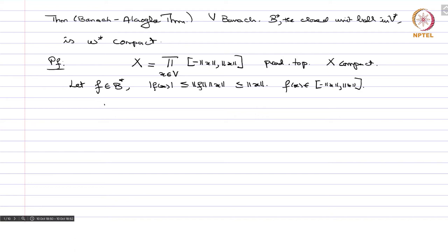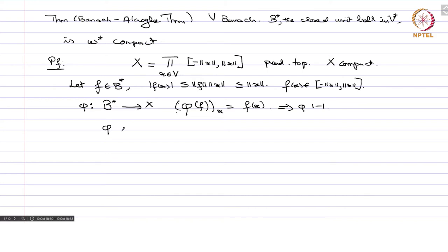So from B-star to X I define a map phi. We have phi of f whose x-th coordinate is nothing but f of x. Since if two functionals agree at all points they have to be the same functional, this implies that phi is one-to-one. So phi is a bijection from B-star onto its image phi(B-star).